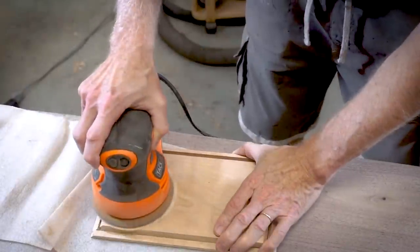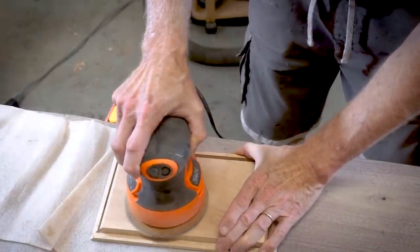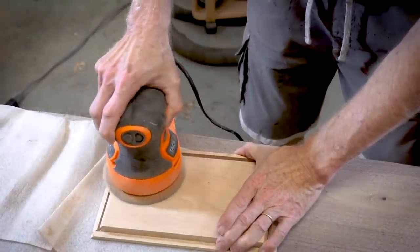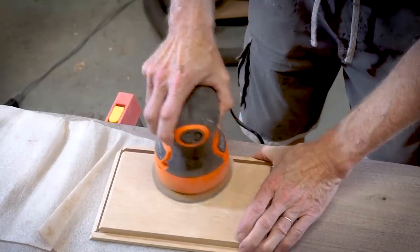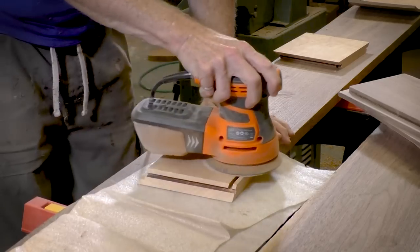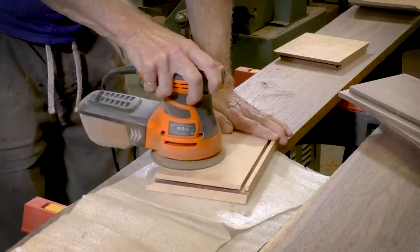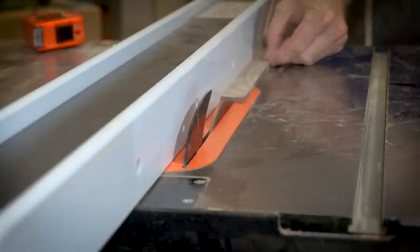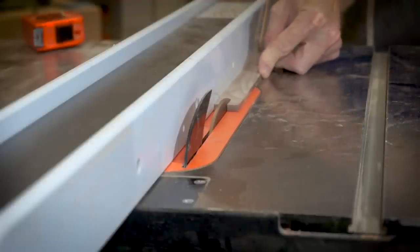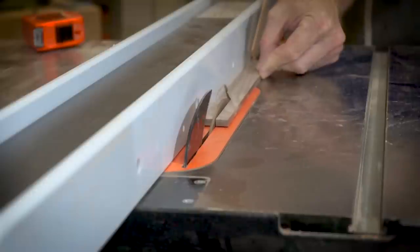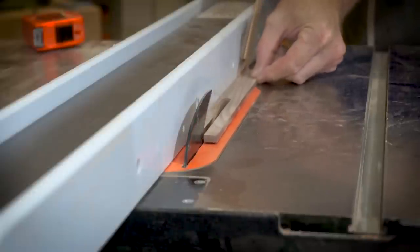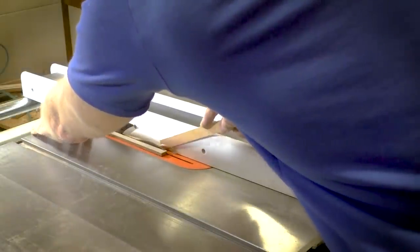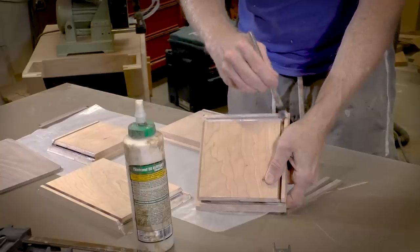Now I'm using my Tac Life sander to sand the interior sides of the box. I'm using the Tac Life sander because Tac Life gave me one to review and I wanted to fully test it out on a project. Now using a small piece of walnut, I'm cutting the splines that will be inserted into the miter joint.